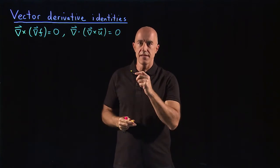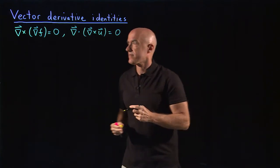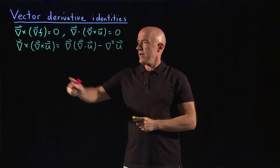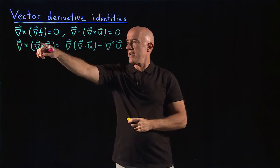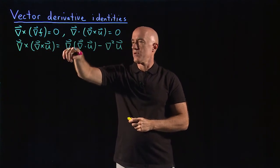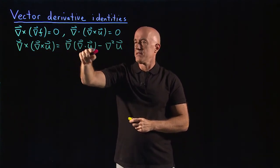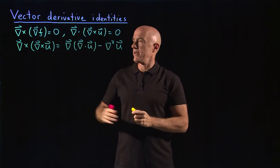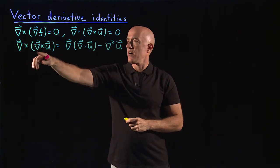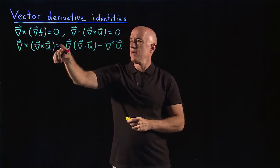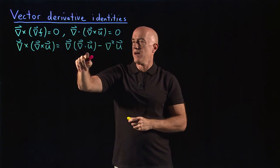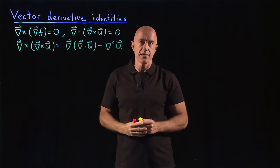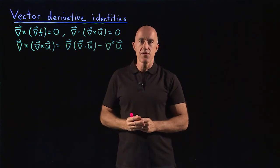The next vector identity is del cross del cross u equals del del dot u minus del squared u. Another way of reading it is: the curl of the curl of u is equal to the gradient of the divergence of u minus the Laplacian of u.